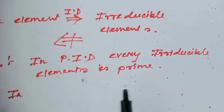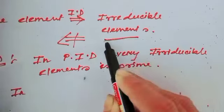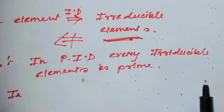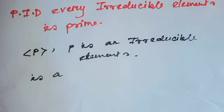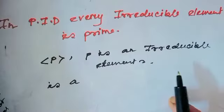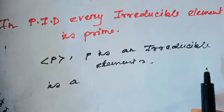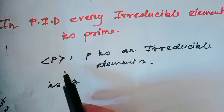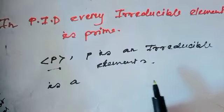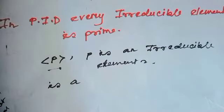In a PID, every irreducible element is always a prime element — the converse becomes true. Consider the ring is a PID and P is an irreducible element; the ideal generated by P is obviously a prime ideal, and in a PID, every prime ideal is a maximal ideal. Try to prove this theorem yourself, and if you have any queries about this theorem, do comment in the comments box.